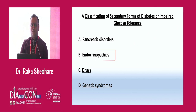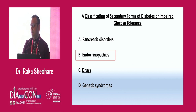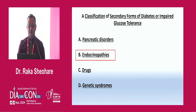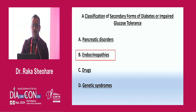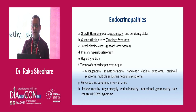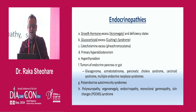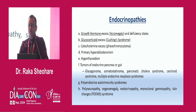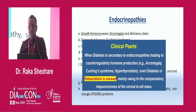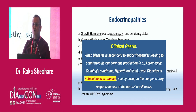Now we come to the most important part: endocrinopathy. This is a very vast topic and you can't complete secondary diabetes in 20 minutes. I want to highlight clinical clues for physicians in their clinics. Growth hormone axis — acromegaly; glucocorticoid axis — Cushing syndrome; catecholamine axis — pheochromocytoma; primary hyperaldosteronism; hyperthyroidism; tumors of the endocrine pancreas. These can all lead to such presentations. A clinical clue is that ketoacidosis is unusual, mainly due to residual responsiveness of normal beta cell mass.